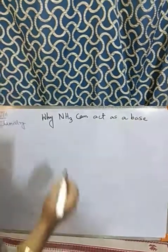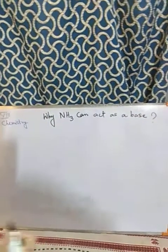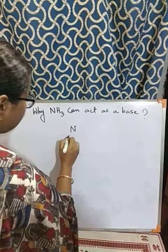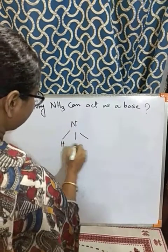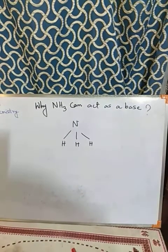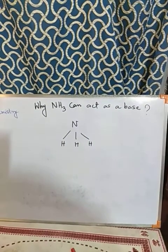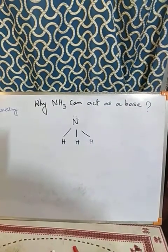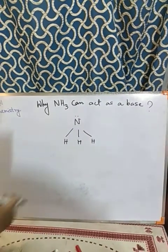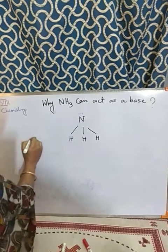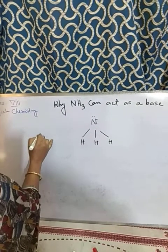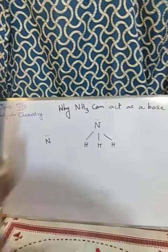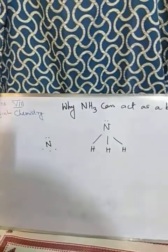To get the answer, we must know the structure of ammonia. This is the structure with one nitrogen and three hydrogens bonded — these are covalent bonds — and here one lone pair is present. Now, how we got this structure: there are five electrons in the outermost shell of nitrogen, so let us draw those five electrons.